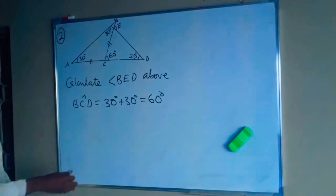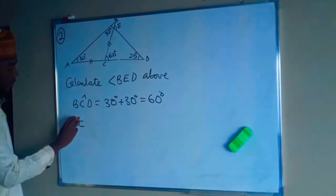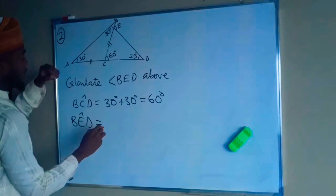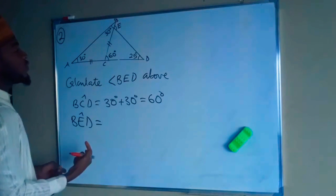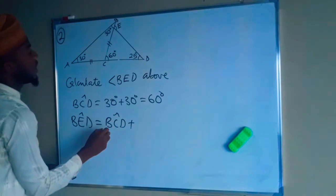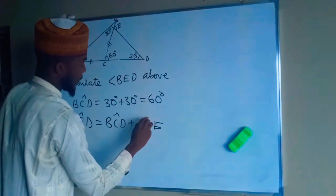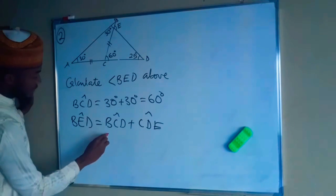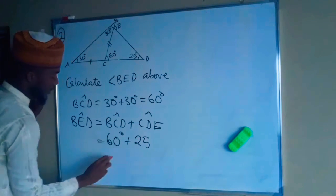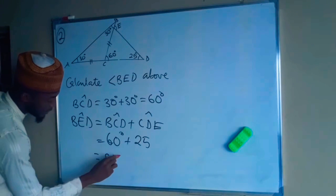Angle BED is also an exterior angle, equal to the sum of its interior opposite angles: BCD plus CDE. That gives us 60 degrees plus 25 degrees, so angle BED equals 85 degrees.